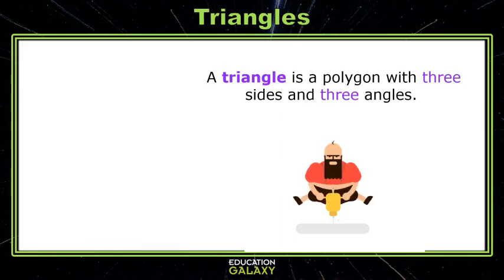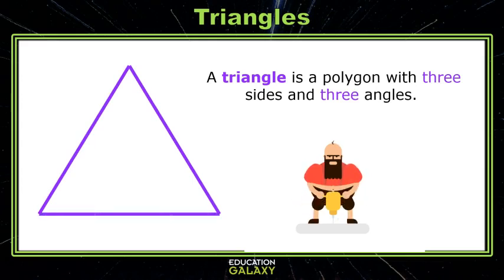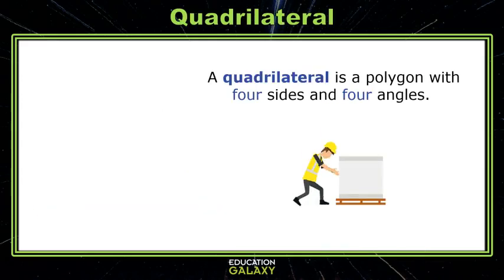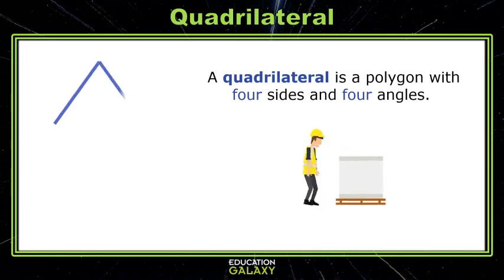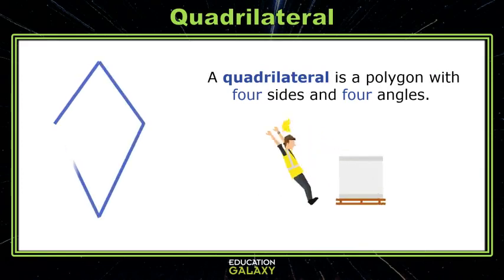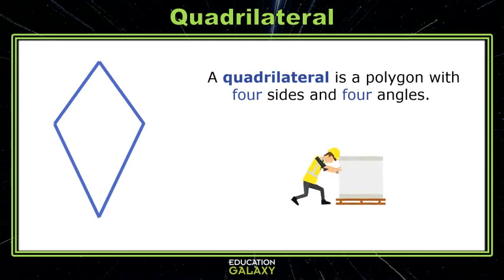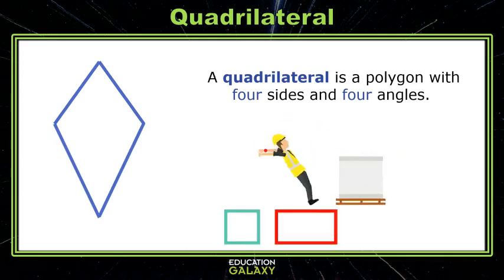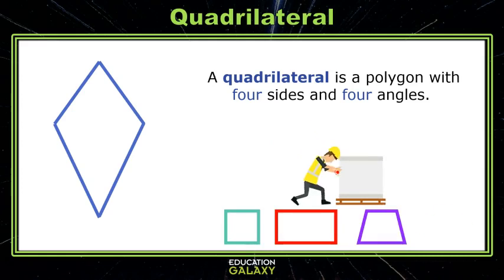A triangle is a polygon with three sides and three angles. A quadrilateral is a polygon with four sides and four angles. Some examples would be a square, a rectangle, a trapezoid, and a rhombus.